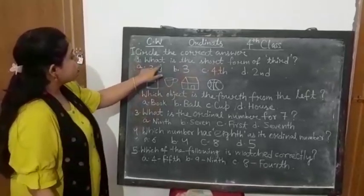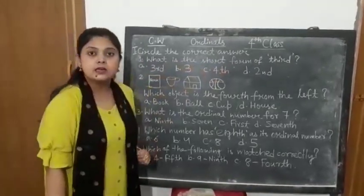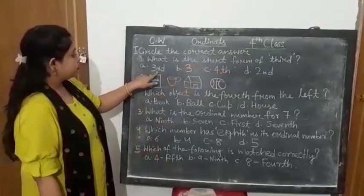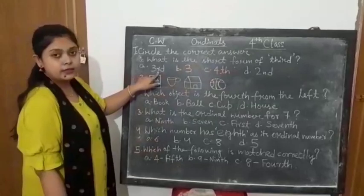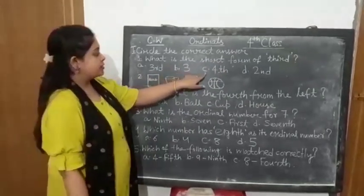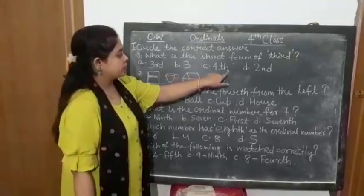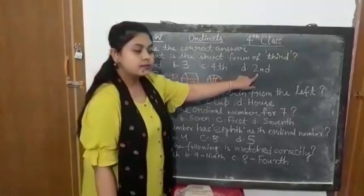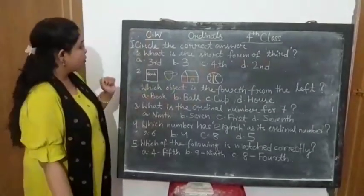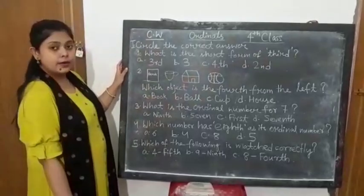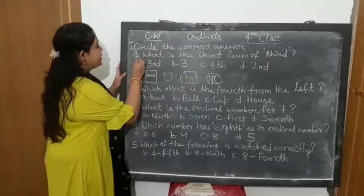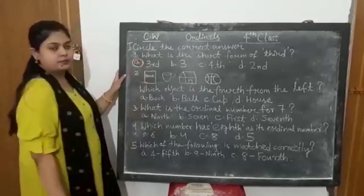See number 1. What is the short form of third? See the options given? A: Third, B: Three, C: Fourth, D: Second. So third - what is the answer here? What we have to circle? We have to circle option A.